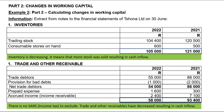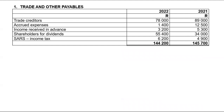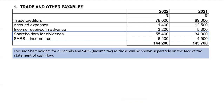Moving to trade and other payables — trade and other payables represents what is owed to creditors or whoever we owe. We have different types of creditors, which are just current liabilities. When it comes to trade and other payables, you need to exclude shareholders for dividends as well as SARS income tax, because dividends will be shown separately on the face of the cash flow statement, and SARS income tax will also be shown separately.